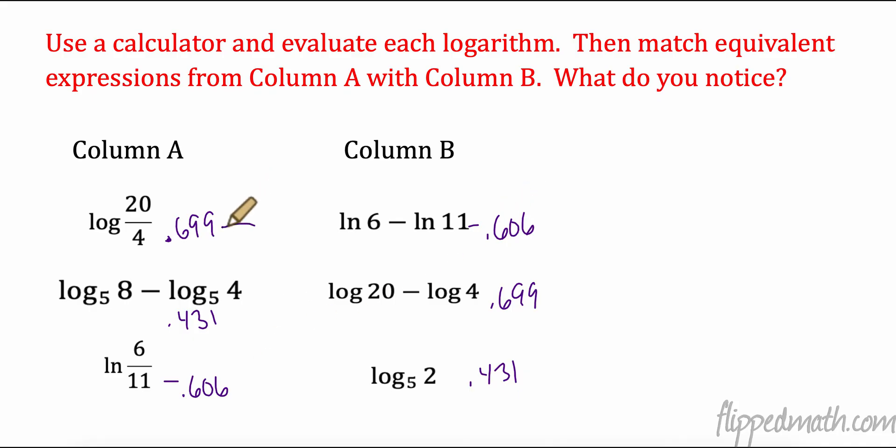So if you look, I have 0.699, 0.431, negative 0.606, which is interesting - how did I get a negative? And then matching over here. Let's start with 0.699 - these two match. I have log base 10, I have a 20 and a 4. So it looks like division is becoming subtraction. This one now is going the other way - I have subtraction. I kept the base. How did 8 and 4 become 2? Well, 8 divided by 4 is 2. And then I have this one - division becomes subtraction. And this kind of explains why this is a negative now. I'm taking the natural log of a smaller number, subtracting the natural log of a bigger number.